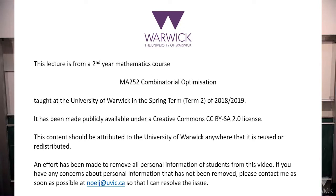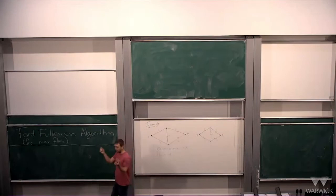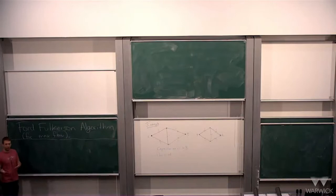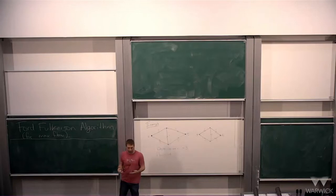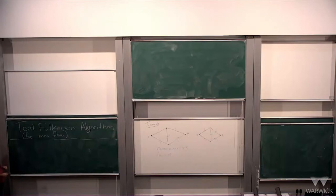Yesterday we talked about max flow min cut. You have some sort of network with capacities on the arcs, and you want to find the maximum flow from s to t. We proved that the max flow equals the min cut, but we didn't come up with any algorithms yet for actually finding the flow.